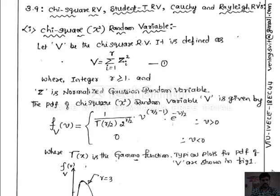Welcome to Savi YouTube channel, Sai Vidya Institute of Technology. In this lecture video, I am going to discuss some of the standard random variables, such as chi-square random variable, student t random variable, Cauchy's random variable, and Rayleigh's random variables.